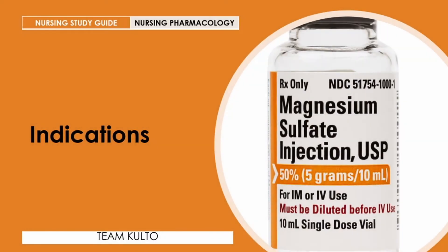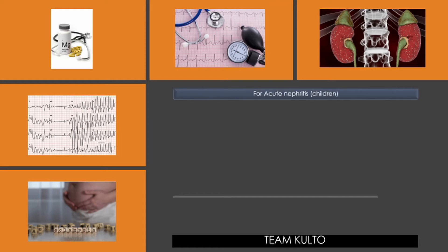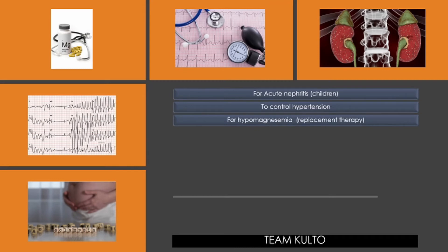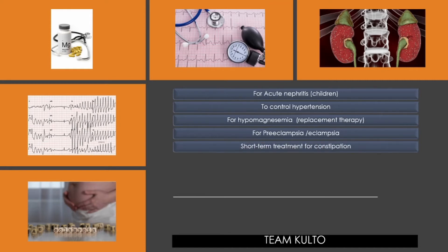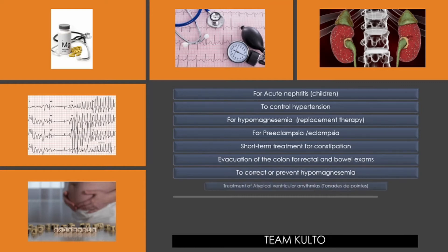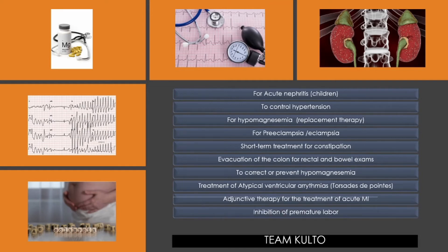Now we're going to have indications — here are some of the reasons a doctor may prescribe MgSO4: acute nephritis in children to control hypertension, hypomagnesemia replacement therapy, preeclampsia or eclampsia in pregnant patients, short-term treatment for constipation, evacuation of the colon for rectal and bowel exams, to correct or prevent hypomagnesemia, treatment of atypical ventricular arrhythmia such as torsades de pointes, adjunctive therapy for acute MI, inhibition of premature labor, and adjunct treatment of exacerbations of acute asthma. You might want to take a screenshot of these to help you memorize.